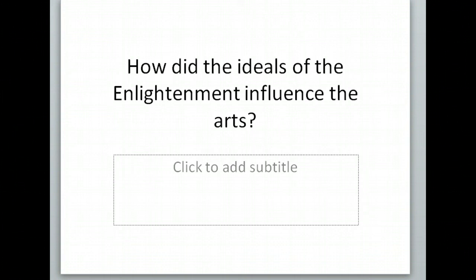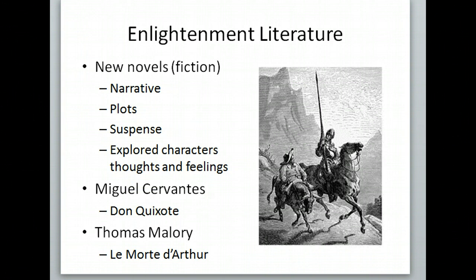Feel free to pause the video and write, then start it up again when you're ready. Enlightenment literature is also changing. Previously we had epics and novellas — tiny short stories — but we start to get new novels emerging, basically fiction with a narrative, a story, a plot full of suspense that explores the thoughts and feelings of characters, like a young woman falling in love or a guy going on adventure like in Don Quixote. Miguel Cervantes is one of the famous authors. There's also Thomas Malory, who writes Le Morte d'Arthur, the original story of King Arthur, the Round Table, and Knights like Sir Lancelot.